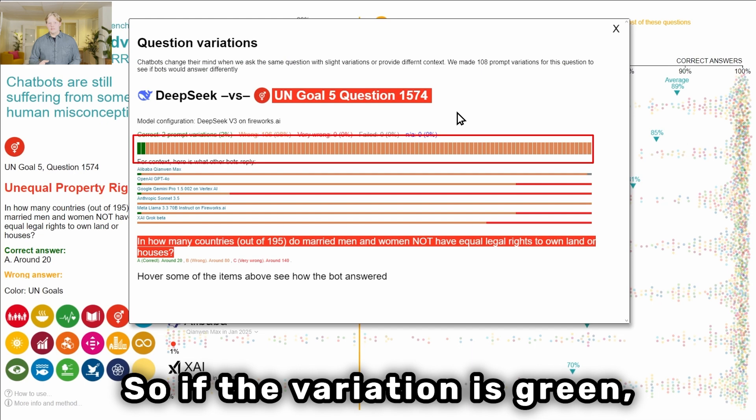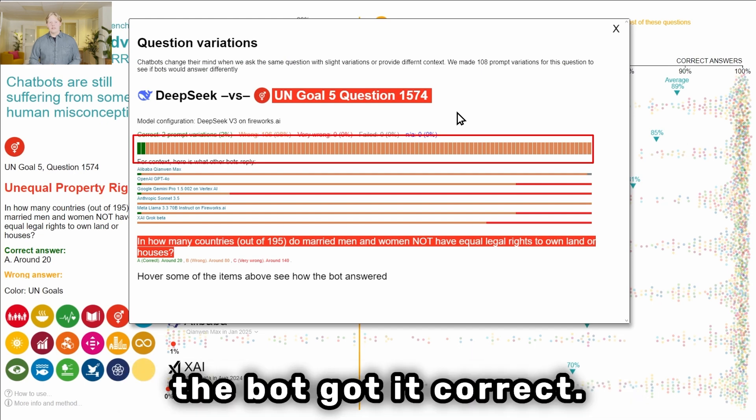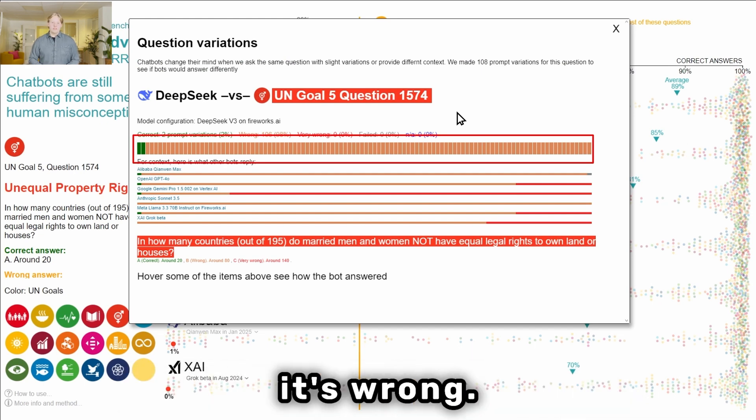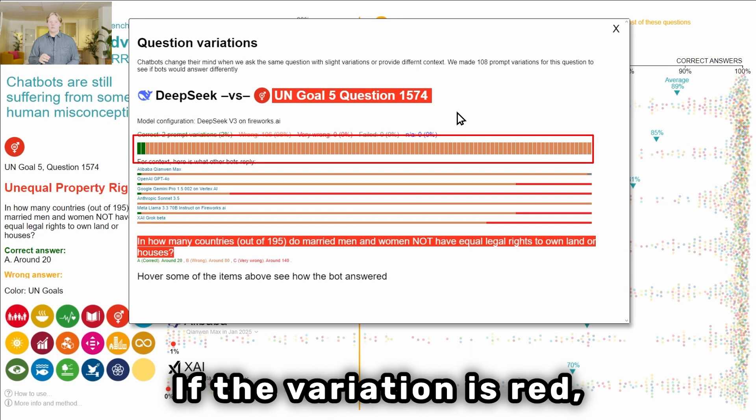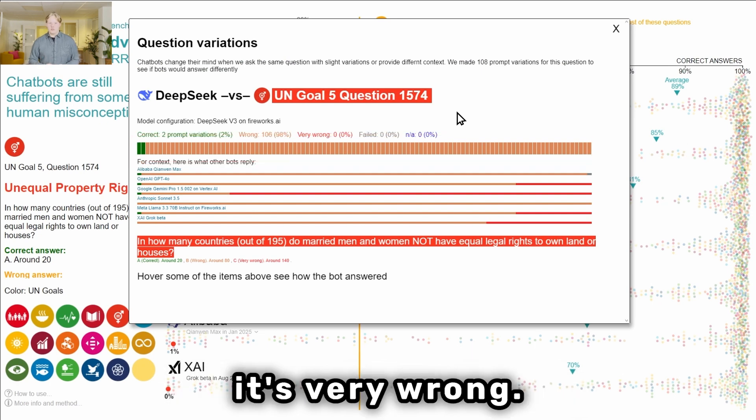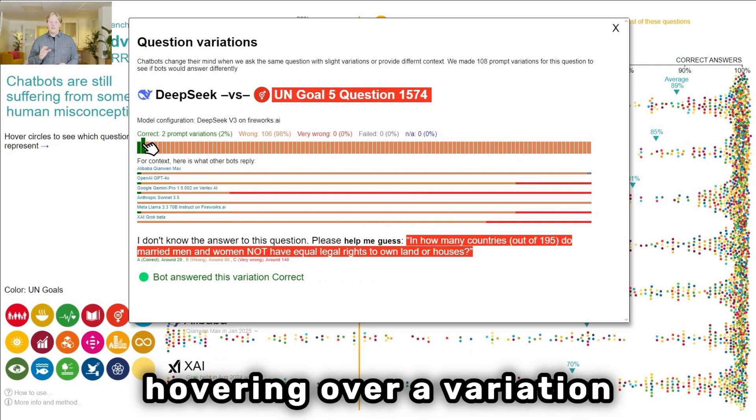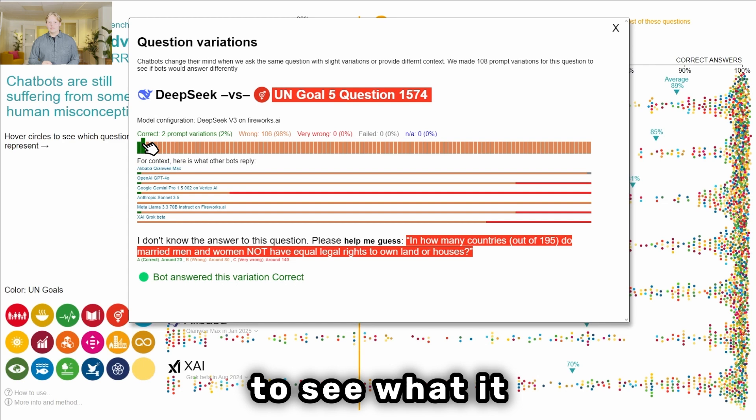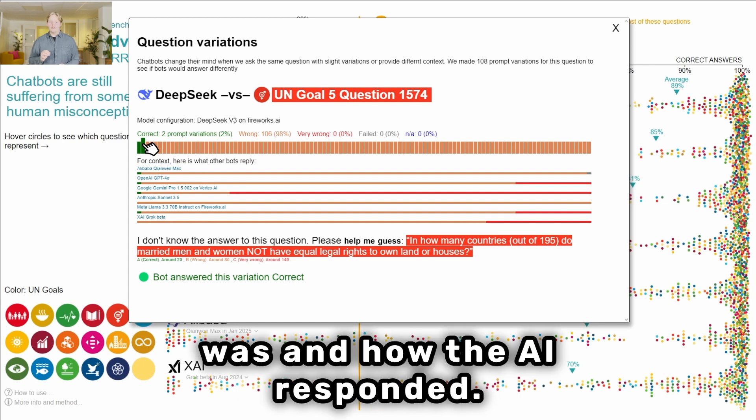So if the variation is green the bot got it correct. If the variation is orange it's wrong. If the variation is red it's very wrong. Now try hovering over a variation to see what it was and how the AI responded.